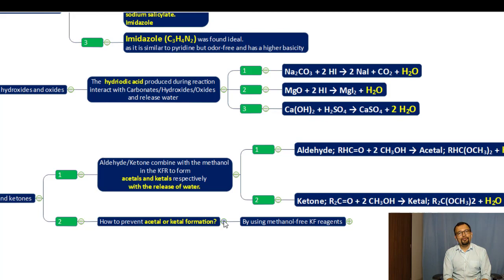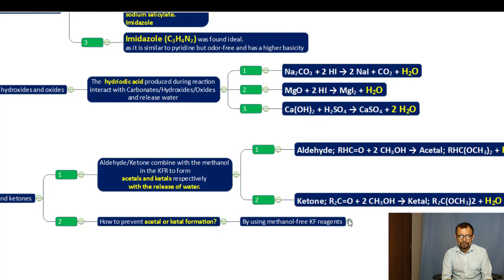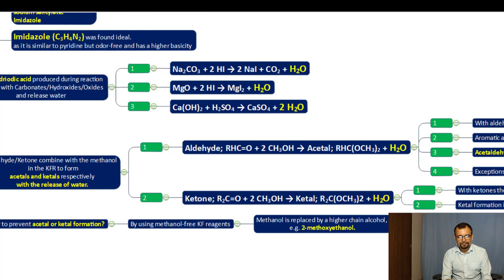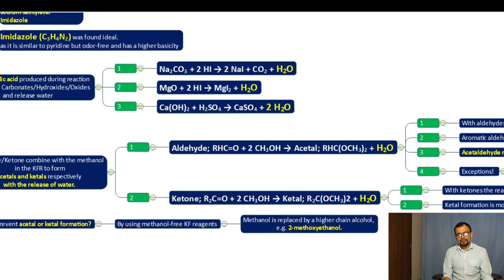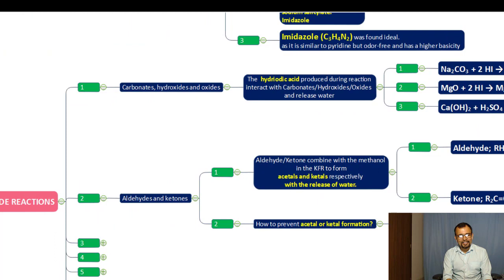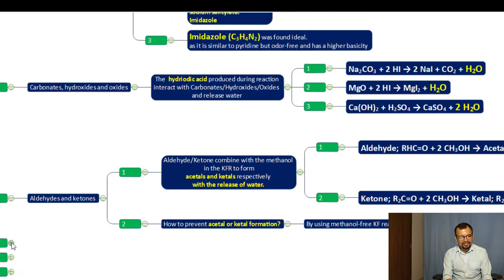To prevent acetal and ketal formation, one can use methanol-free KF reagents. Since methanol reacts with ketones and aldehydes, removing it prevents this side reaction. A suitable replacement for methanol is 2-methoxyethanol. Special methanol-free KF reagents are now commercially available and can be used for determination of water content in ketones and aldehydes.